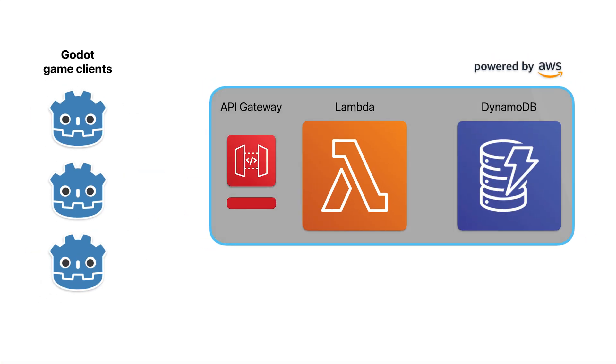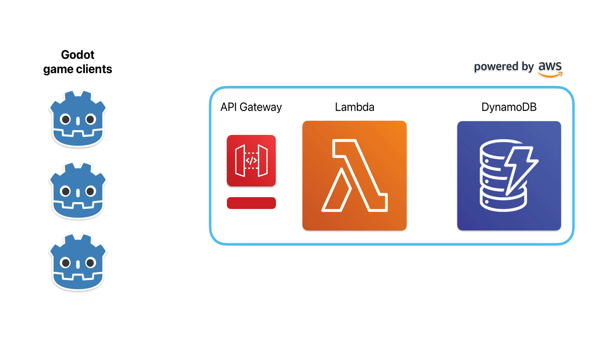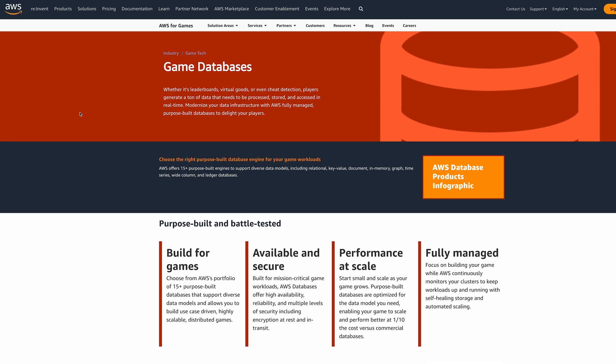Let's take a quick look at the tech stack. We have an AWS ecosystem with API Gateway and Lambda to manage our WebSocket connection to the Godot clients — we saw how to set that up in the last couple of videos. Lambda also uses DynamoDB to retrieve and store player and match data to forward back to the clients.